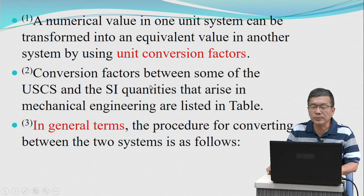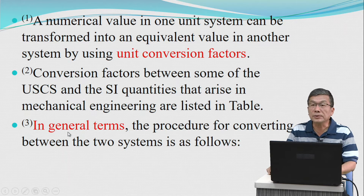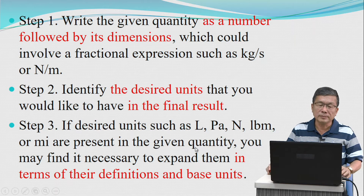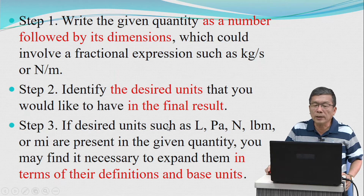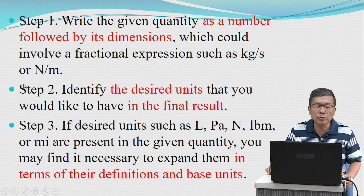A numerical value in one unit system can be transformed into an equivalent value in another system by using a unit conversion factor. Conversion factors between some USCS and SI quantities that arise in mechanical engineering are shown in the table. In general terms, the procedure for converting between the two systems is as follows. Step one: write the given quantity as a number followed by its dimension, which could involve a fractional expression such as kilograms per second or newtons per minute.